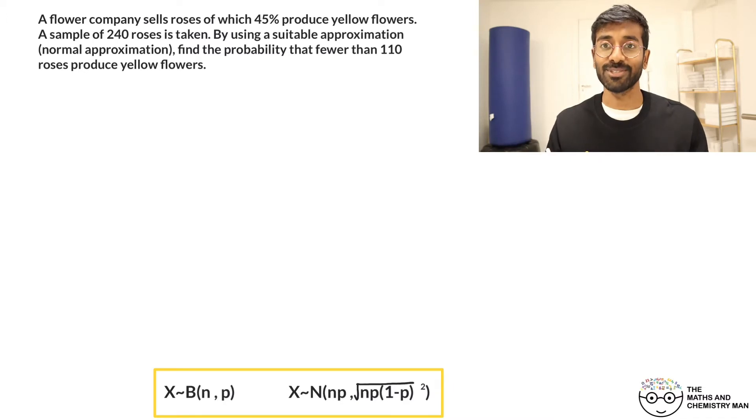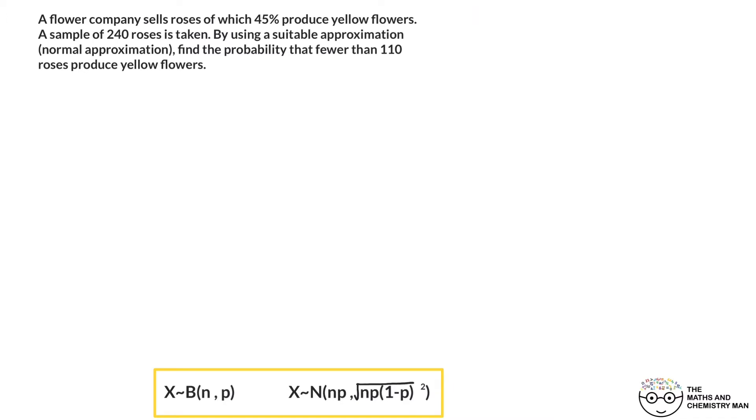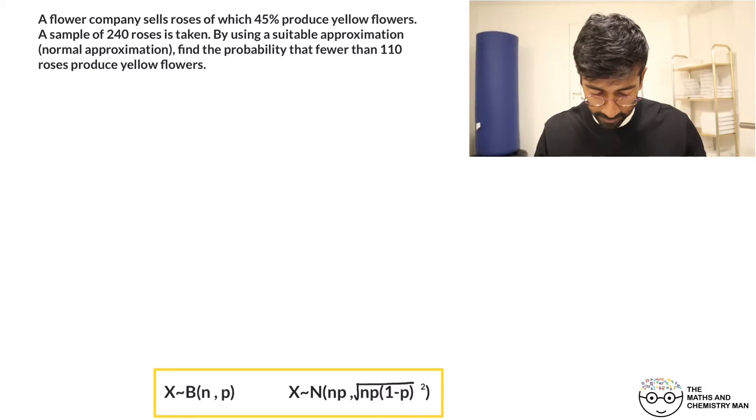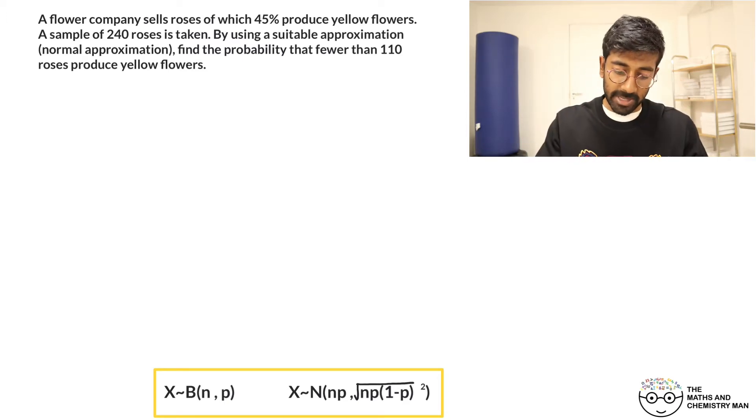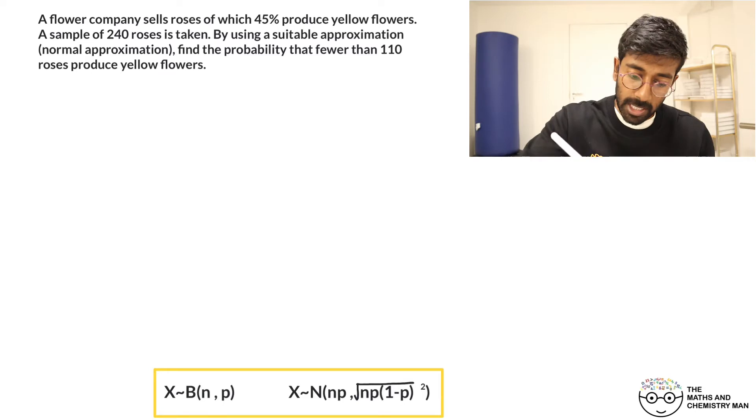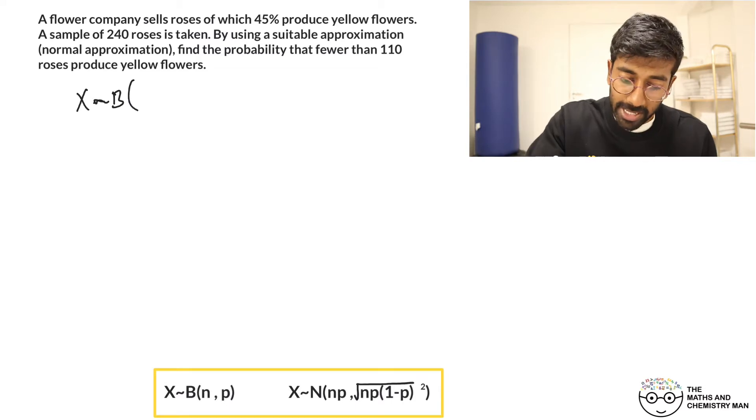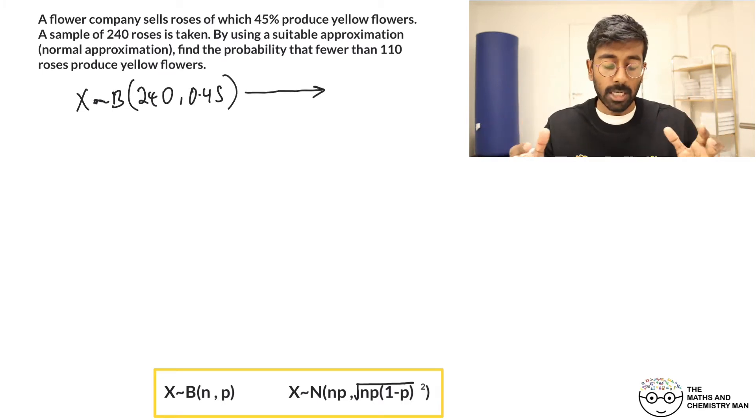Let's get going then. Now the reason I put this down the bottom here is to help you with when we're approximating to a normal distribution. We're actually going to change a binomial distribution into a normal distribution. So let's start by putting out our binomial distribution. We'll have X can be approximated binomially where n is 240 because it's 240 roses, and the probability here was 0.45.